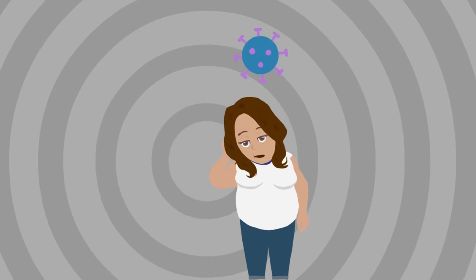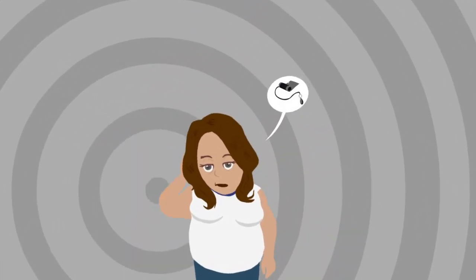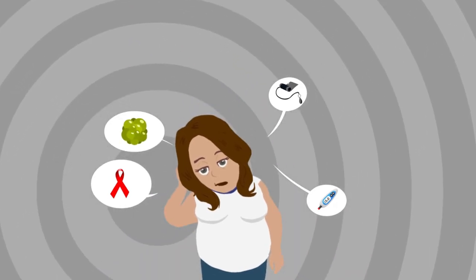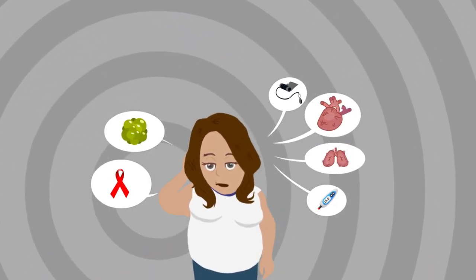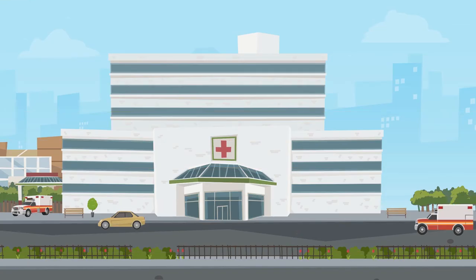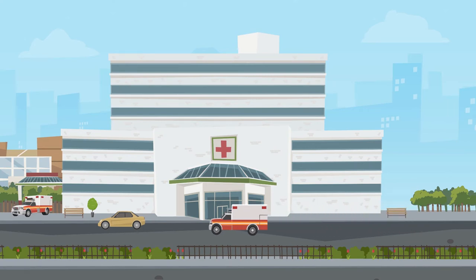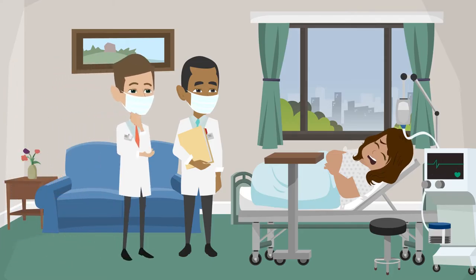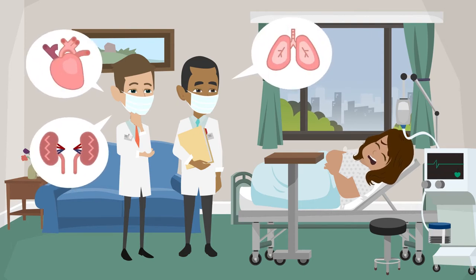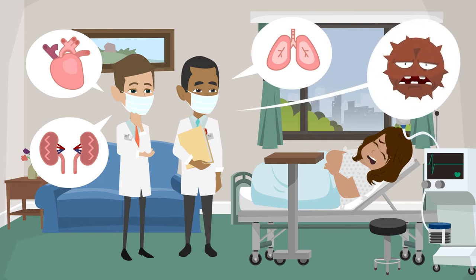One out of four people who get COVID-19 have chronic health conditions such as high blood pressure, diabetes, HIV, cancer, heart, lung, liver or kidney disease. These people are more likely to get sicker with the virus and to require hospitalization. The medical team in the hospital tries to support the patient's heart, lungs and kidneys and to treat any other infections as the person's immune cells battle against the virus.